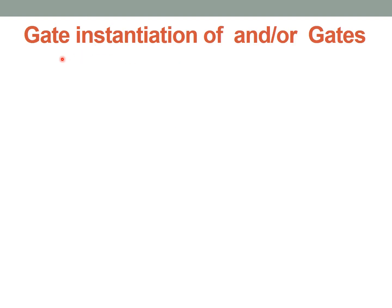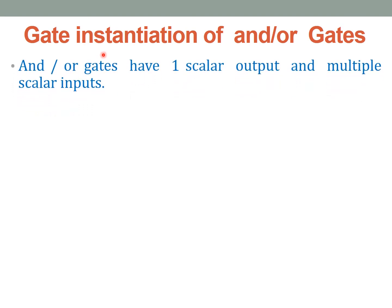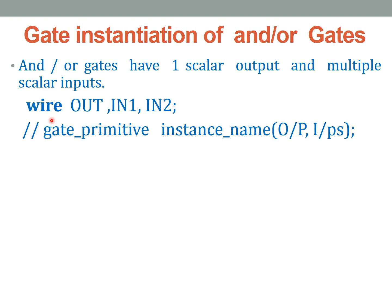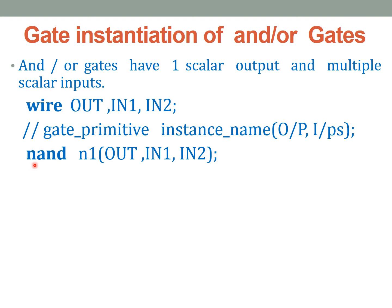Now let us see how to instantiate these gate primitives while writing the program. The AND/OR gates have one scalar output and multiple inputs. The rule for writing the instantiation is: write the gate primitive name, give an instance name (which is optional for gate instantiations), and then list the terminals with the output first followed by the inputs. For example, to instantiate the NAND gate, write 'nand', give instance name N1, then the output variable followed by input variables.